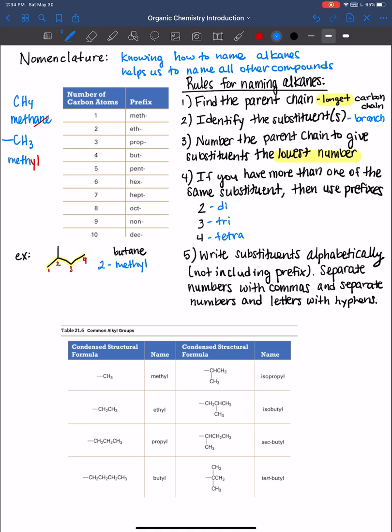Now, once you have everything identified, and I always like to write down the pieces of the name first before I glue them together to make the full name, because you want to write it all one word. So write the substituents alphabetically, not including prefixes if they exist. Separate numbers with commas, and separate numbers and letters like I've done here with hyphens. So this would look like two hyphen methyl butane, all one word.